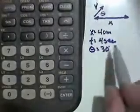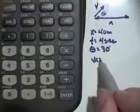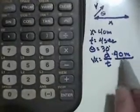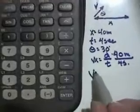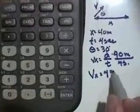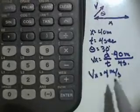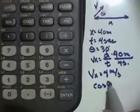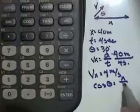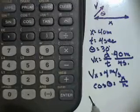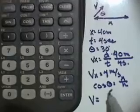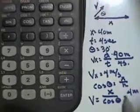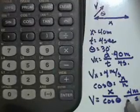We know the x-velocity because velocity in the x-direction equals the distance traveled divided by the time. So 40 meters divided by 4 seconds gives us a velocity in the x-axis of 10 meters per second. Now to find the hypotenuse or actual velocity, cosine of the angle equals adjacent over hypotenuse, so the actual velocity equals the x-velocity divided by the cosine of the angle — which becomes 10 meters per second divided by cosine of 30 degrees.